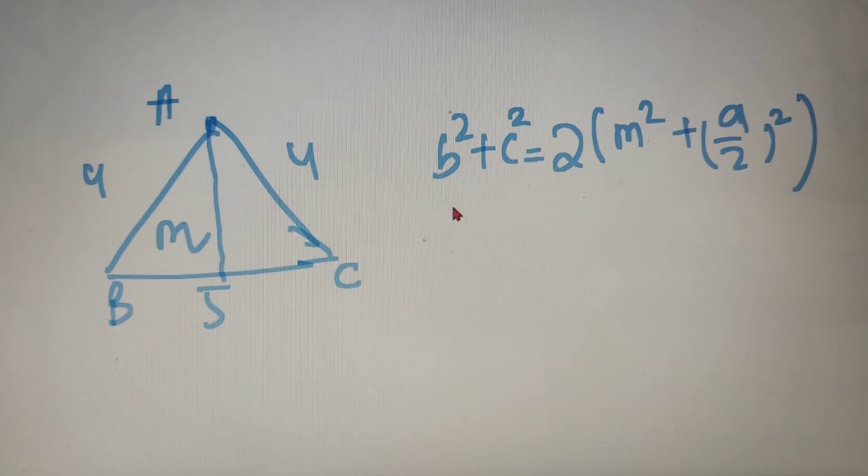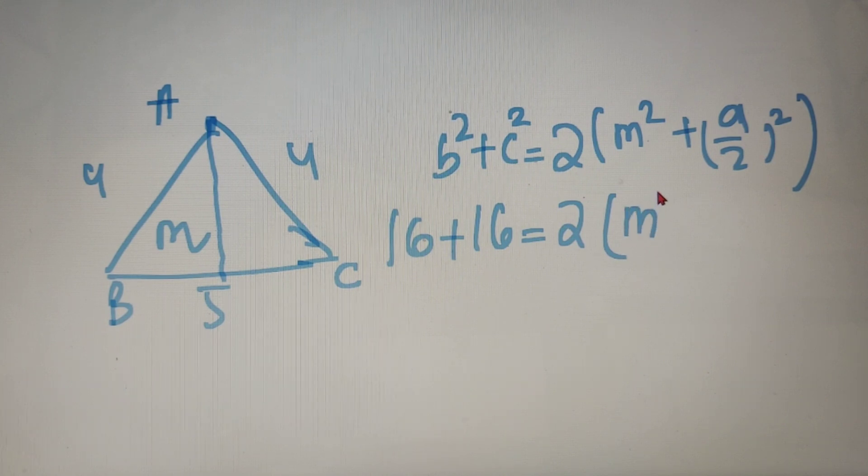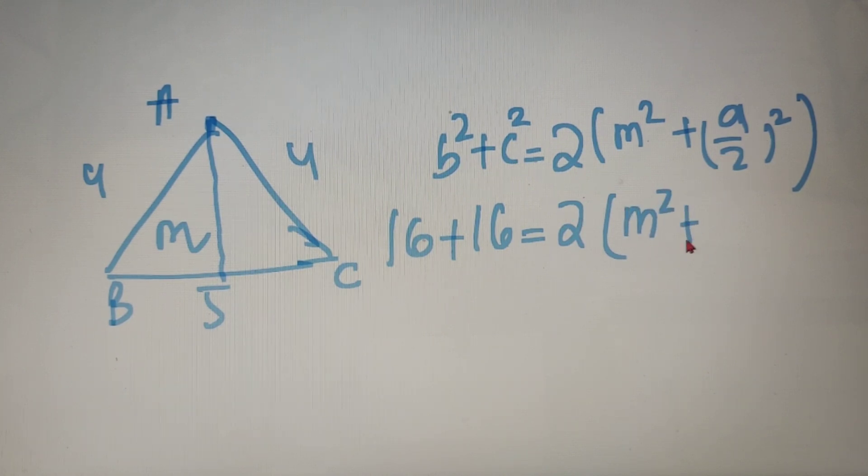So the value of B is equal to 4, so B square is equal to 16. The value of C is also equal to 4, so C square is equal to 16. And the value of M is what we have to calculate. And the value of A is equal to 5, so the value of A by 2 whole square is equal to 2.5 whole square.